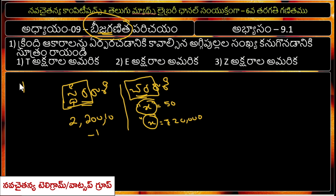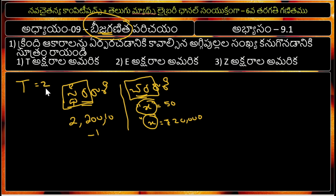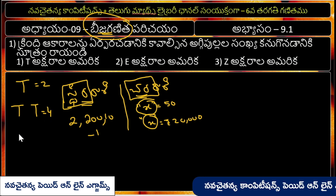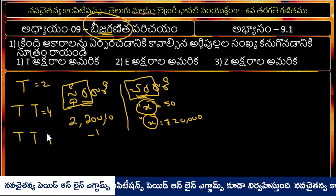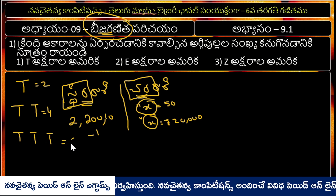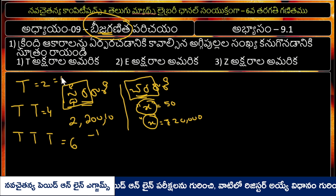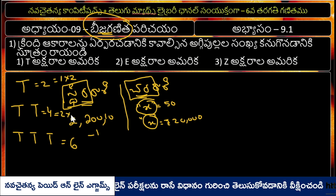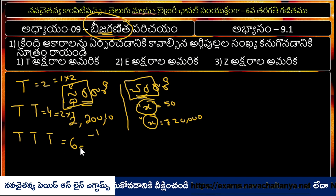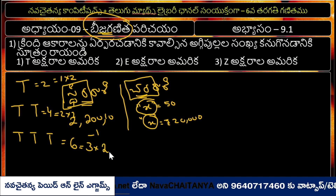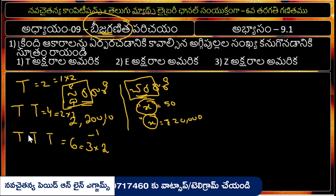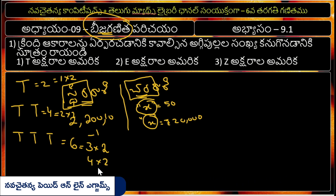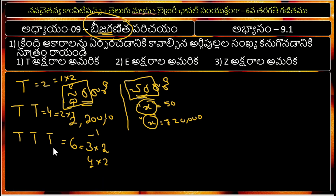1 T is 1 and 2. Suppose you have 2 T, that is 4. Suppose you have 3 T, that is 6. Suppose you have 1 T is 2, 2 T is 2, 3 T is 3, 4 T is 4, 3 T is 4, 3 T is 2.